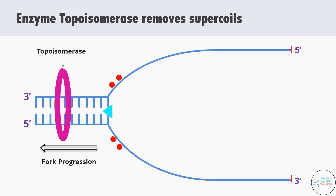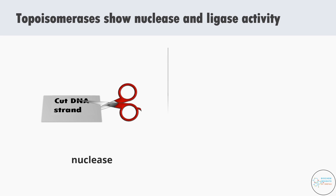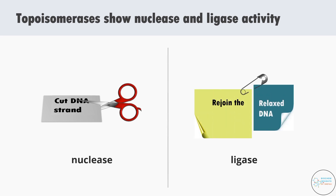How do topoisomerases remove supercoils? Topoisomerases show nuclease and ligase activity, by which they first cut the coiled DNA strand and then rejoin the relaxed DNA strand so that the process of replication is continuous and uninterrupted.